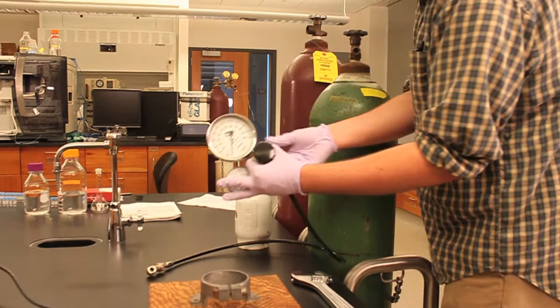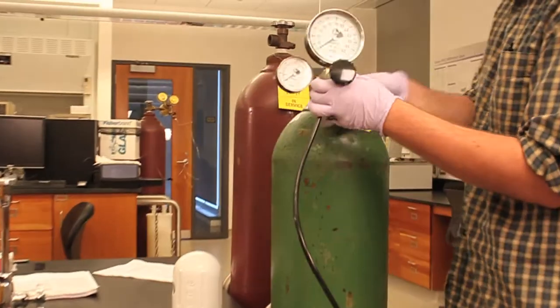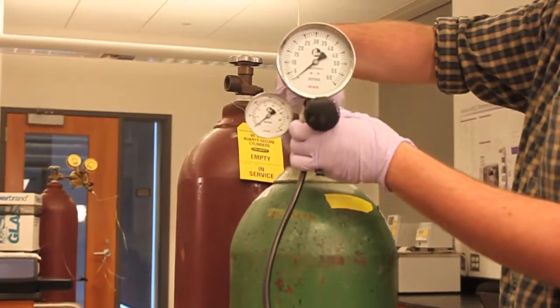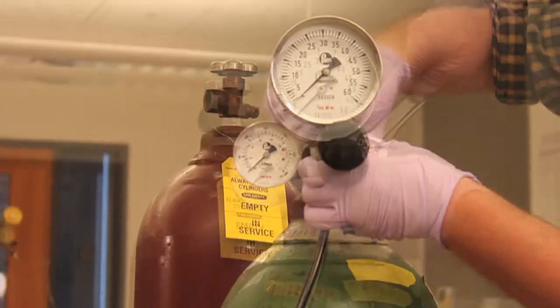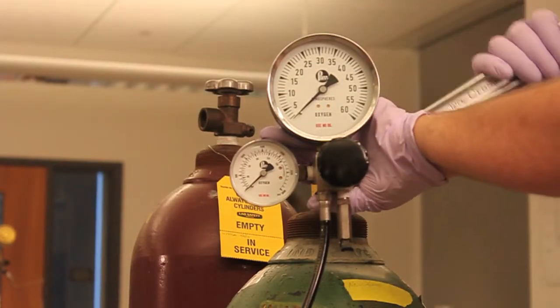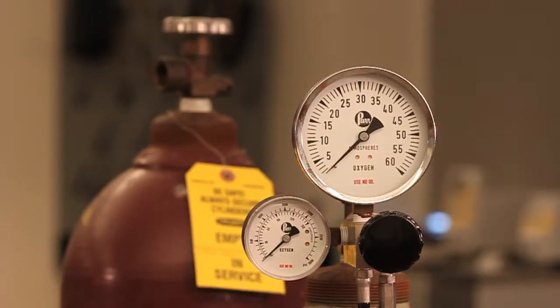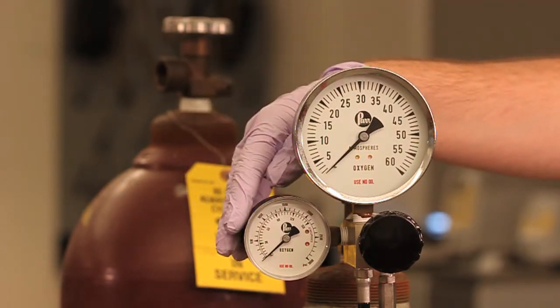With the cylinder secure and the cap removed, a regulator can be attached. The regulator is used to regulate the output pressure from the cylinder, generally to a much lower pressure than that of the full cylinder. On the regulator, there are two pressure gauges.